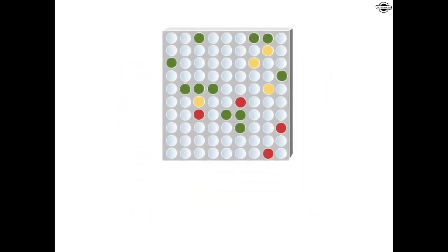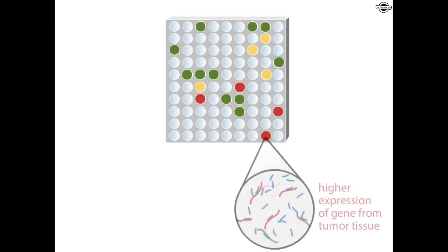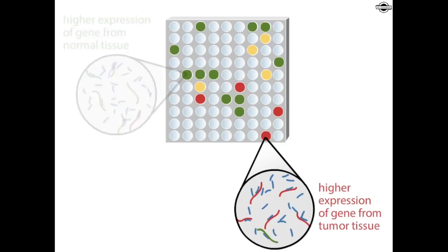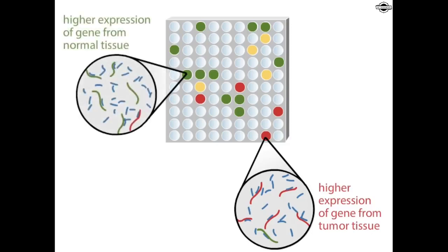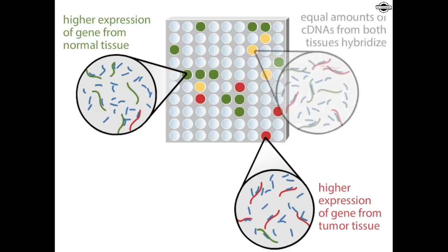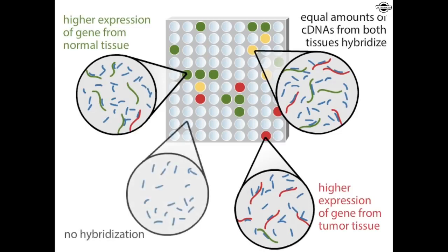In this example, a red spot indicates that expression of the gene is higher in the tumor tissue compared to normal tissue. In contrast, a green spot indicates that expression of the gene is higher in normal tissue than in the tumor tissue. A yellow spot indicates that the gene is expressed equally in both tissues. If the gene is not expressed in either tissue, the spot will not fluoresce.